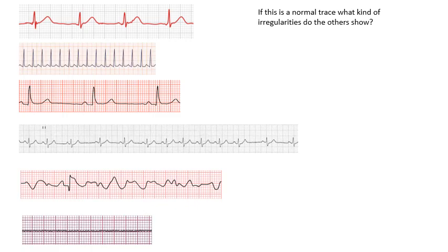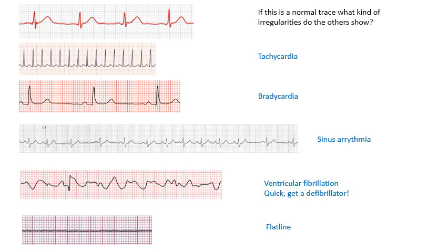Here are some traces. The one at the top is a normal heartbeat. Pause the video and see if you can figure out what the others are. The answers: tachycardia — beating too fast; bradycardia — beating too slow; sinus arrhythmia — you can see it speeds up and slows down a bit; ventricular fibrillation — it's all over the place; and the last one — flat line.